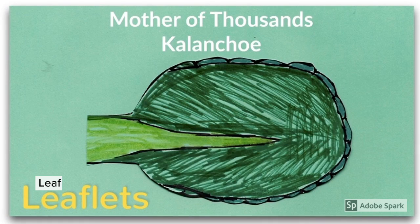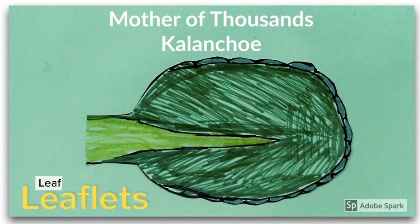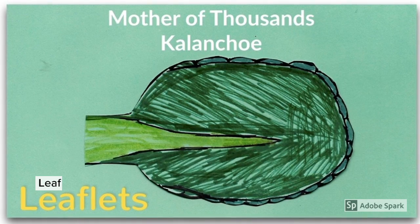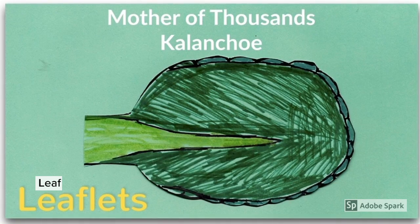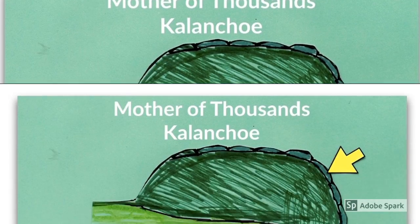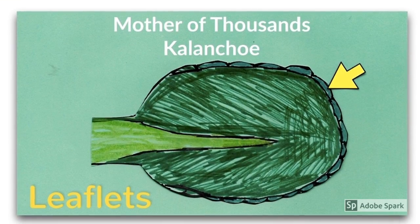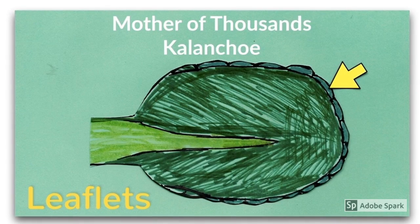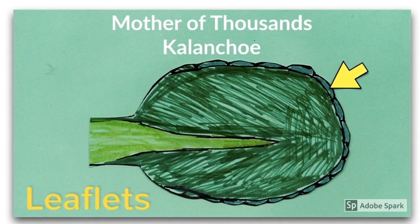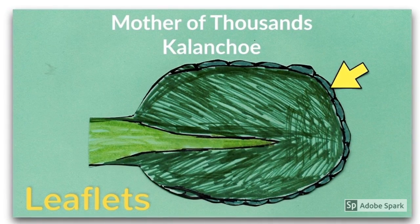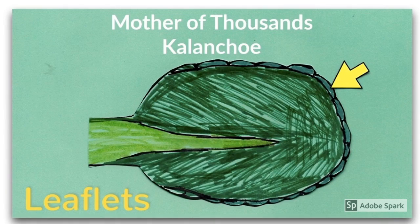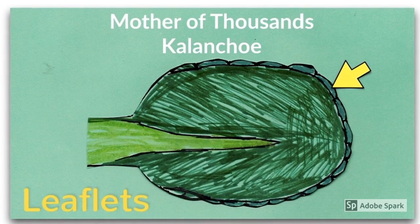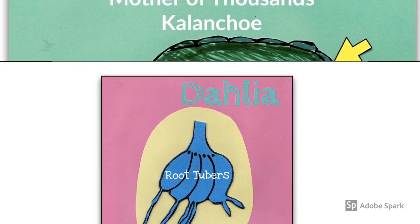The next example of natural vegetative propagation involves the leaf, using the plant known as the mother of thousands, or Kalanchoe. Some plants like the Kalanchoe can develop little individual leaflets or plantlets along the edge of its leaf. These can drop off and then sprout into new plants.